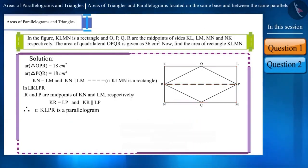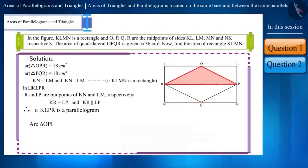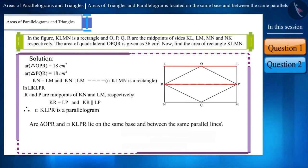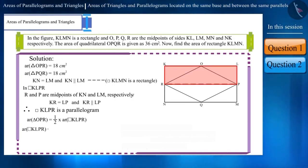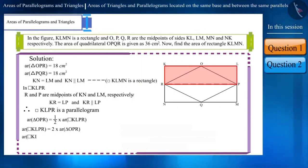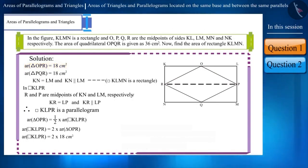In quadrilateral KLMN, the two quadrilaterals formed by joining the midpoints of a pair of opposite sides will also be parallelograms. So, can we say that triangle OPR and parallelogram KLPR lie on the same base and between the same parallel lines? Yes. This means the area of triangle OPR is half the area of parallelogram KLPR, or the area of parallelogram KLPR is twice the area of triangle OPR. Hence, the area of parallelogram KLPR is twice 18 cm², which gives us 36 cm².